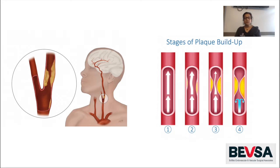The carotid arteries are a set of arteries in the neck that deliver blood and oxygen to your brain and head. As we age, fatty deposits can accumulate in the blood vessels, which can then limit the blood flow. The narrowing of blood vessels in the carotid arteries due to plaque is called carotid disease.